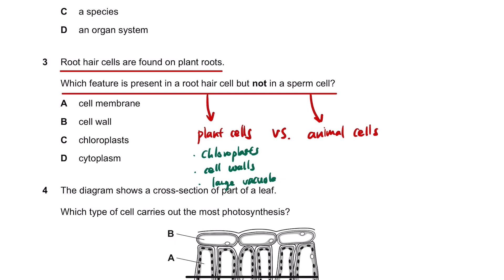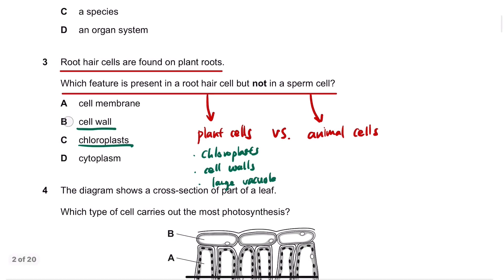We can see that the cell wall and chloroplasts are here, so the answer should be B or C. But here's the trick — some of you might think both of them can be the answers. Is this question mistaken? Nope, it has a trick.